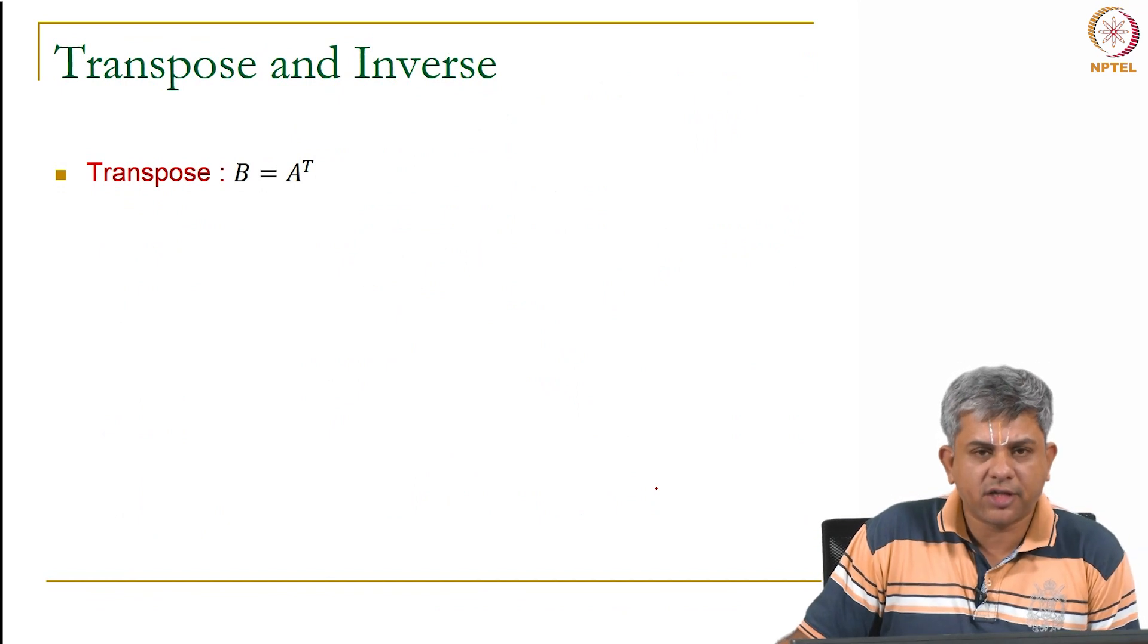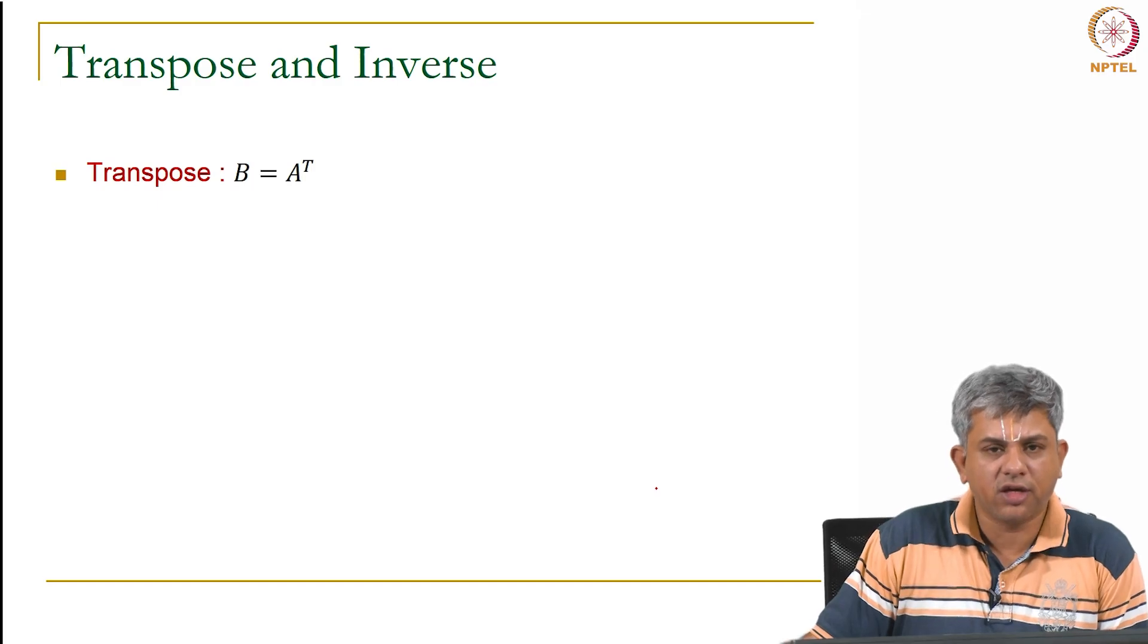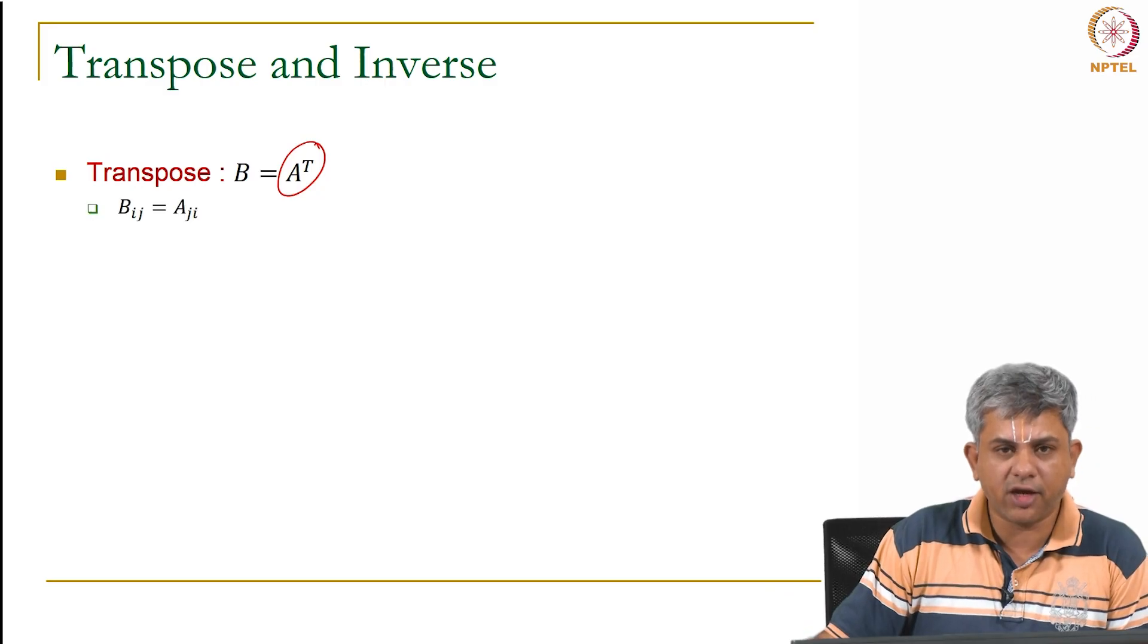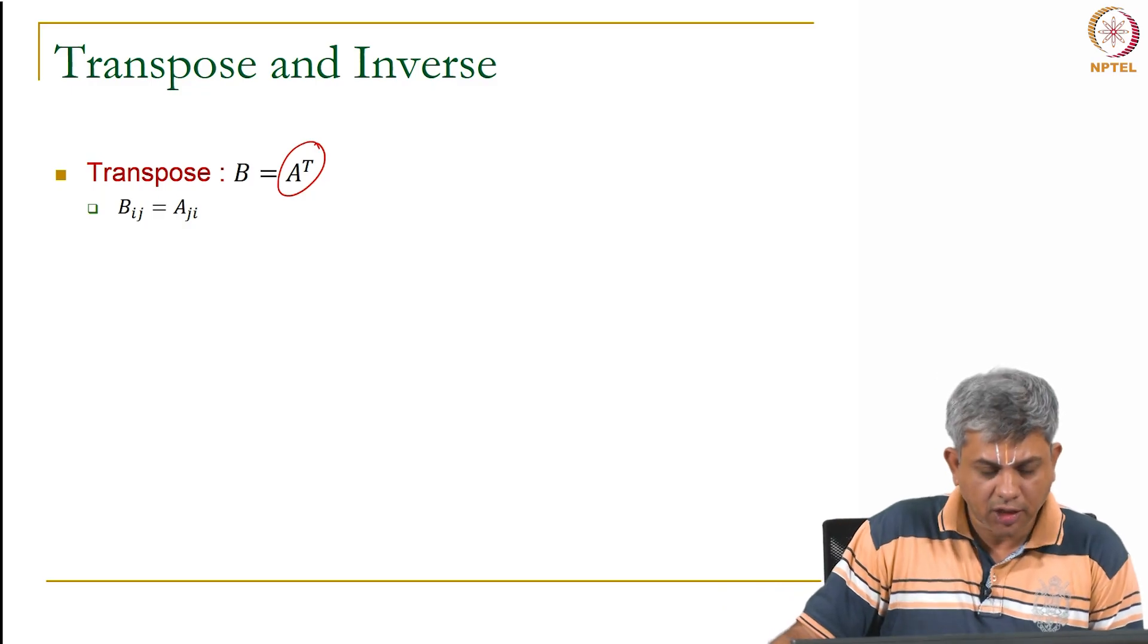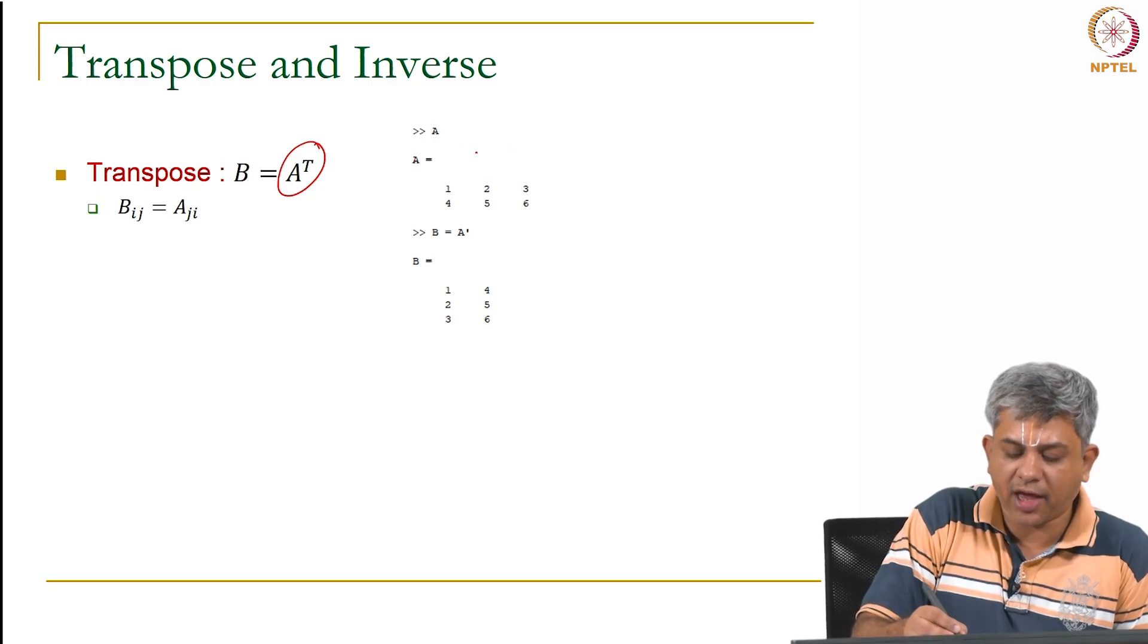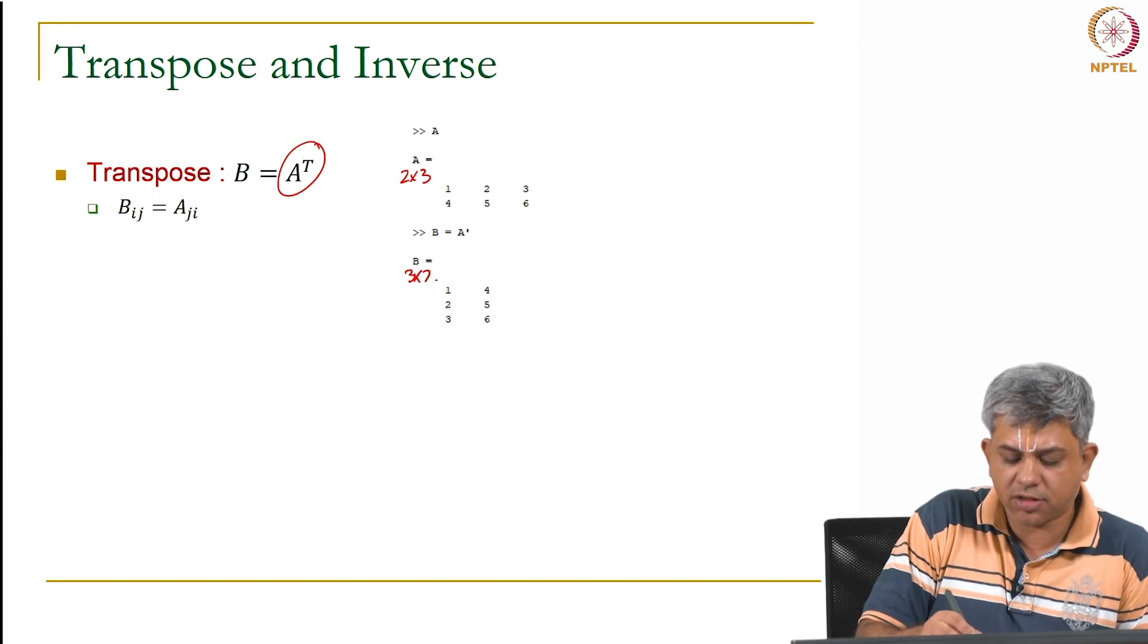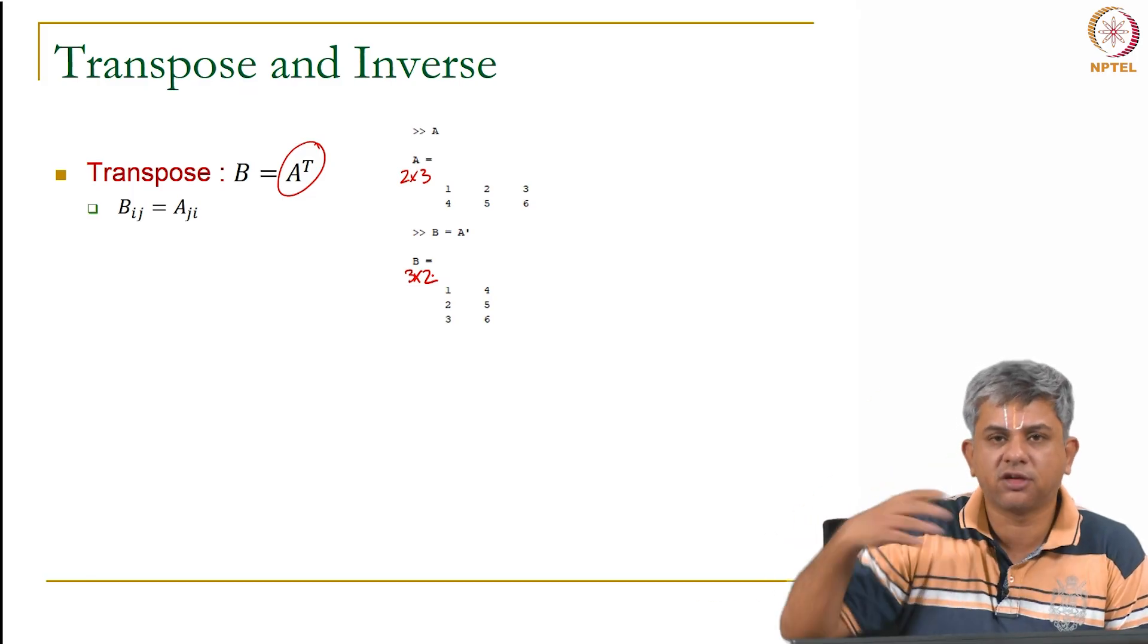A couple of other operators that we will be looking at. First is of course the transpose. Transpose, all of you know is simply written as A transpose. Mathematically all you do is you take sort of across the diagonal, you take a mirror image in case it is a square matrix. So B_ij will be A_ji. So if you have the matrix 1, 2, 3, 4, 5, 6, the same matrix we have been using, it gets flipped. So if A has size 2 cross 3, T becomes a 3 cross 2 matrix and the elements flip.